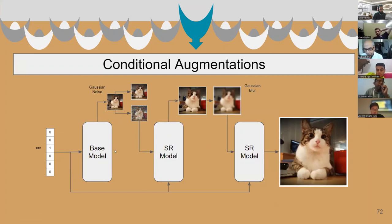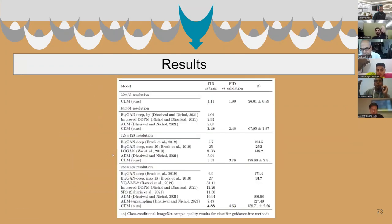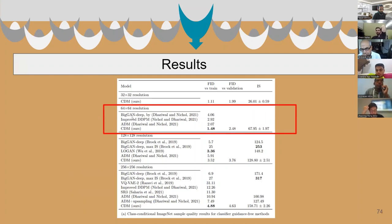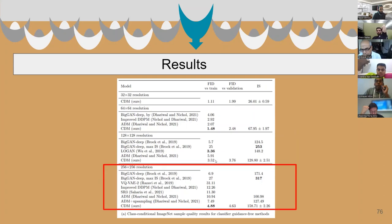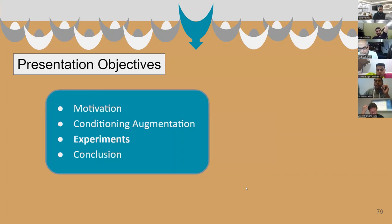We are done understanding the whole pipeline. Let's check how this setup performs against other baselines. In the task of 64x64 image generation, it clearly outperforms other GAN or diffusion-based models. In the case of 128x128 high-resolution image generation, it performs slightly less than the Logan model. Ultimately, in 256x256 high-resolution image generation, it outperforms all other existing models, achieving state-of-the-art results among classifier-free diffusion models.